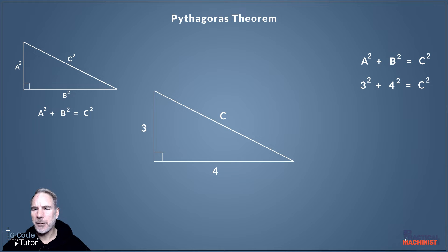Okay, so we can do this math. So 3 squared is the same as 3 times 3, and 4 squared is the same as 4 times 4. So we know that 3 times 3 plus 4 times 4 is equal to C squared. So we can do the math here: 3 times 3 equals 9, 4 times 4 equals 16.